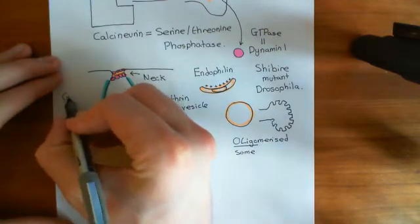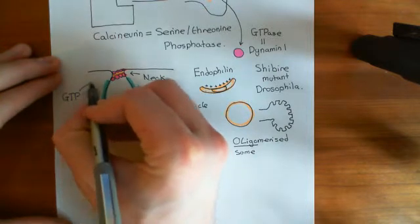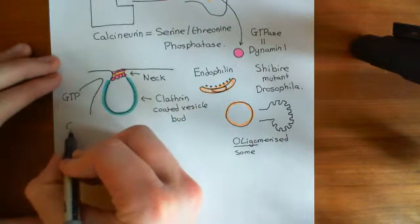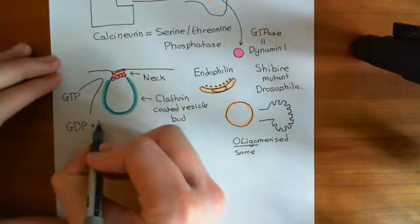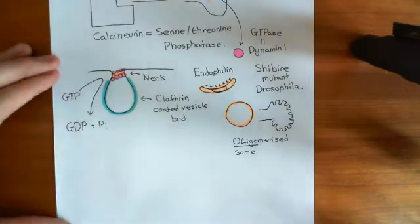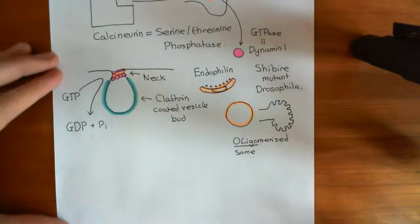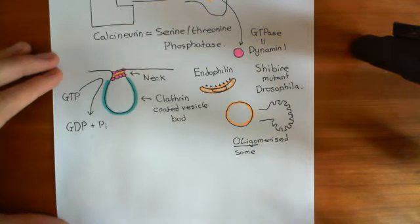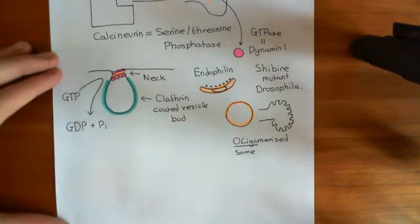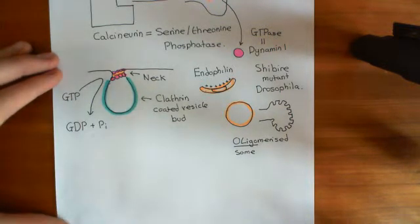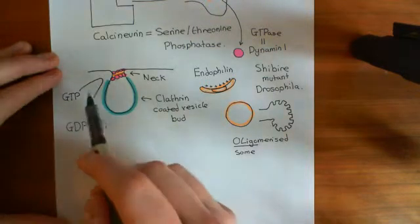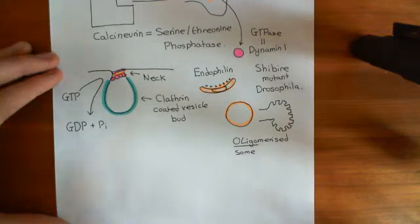The dynamin-1 is going to start hydrolyzing guanosine triphosphate to guanosine diphosphate and inorganic phosphate — cutting off the gamma phosphate of the GTP. GTP is just like ATP, adenosine triphosphate, but with a different organic base: guanine rather than adenine. The point is, this reaction releases energy just like the hydrolysis of ATP.